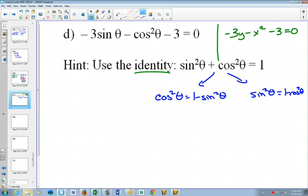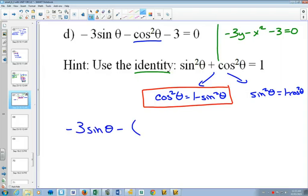Now, when we look at our equation, our original equation, can you see that we have a cos squared in that equation? And since we know that cos squared is equal to 1 minus sine squared, we can substitute that in. So we rewrite the whole equation. Negative 3 sine theta minus, and whenever you substitute something in, put it in brackets, 1 minus sine squared theta minus 3 equals 0.